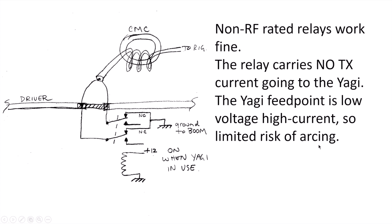What about the types of relays to use? Non-RF rated relays will work just fine. Look, the relay is carrying none of the transmit current going to the Yagi. This relay has nothing to do with the transmit RF that drives the Yagi. It's only grounding the element when not in use. When it's not grounded, the Yagi feed point is a low voltage high current point. So there's limited risk of arcing because it's a very low voltage point.